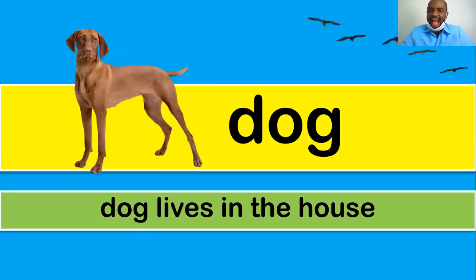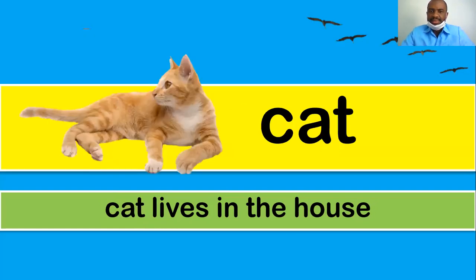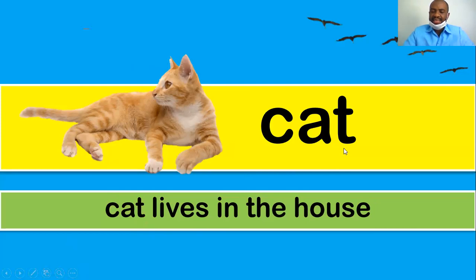Dog — a dog lives in the house, it's a domestic animal. Cat — a cat lives in the house, it is a domestic animal.